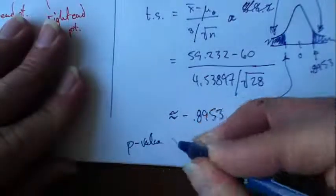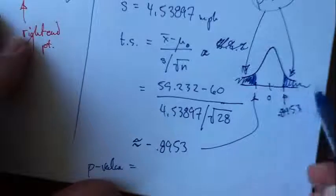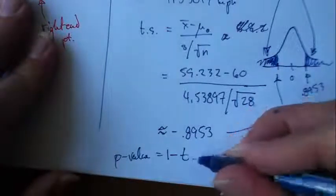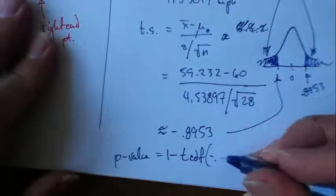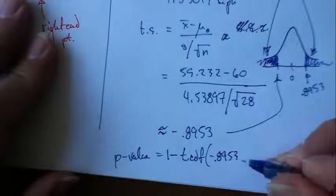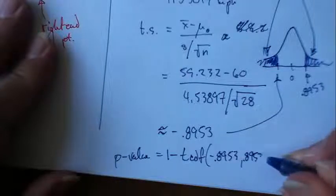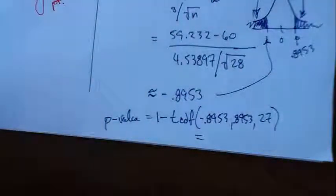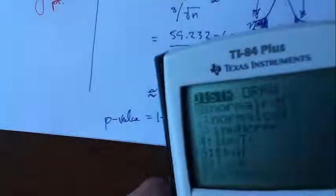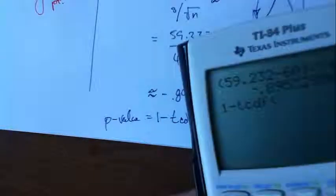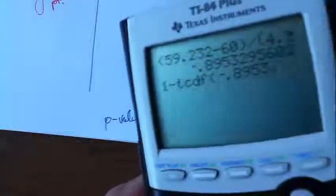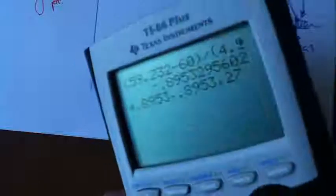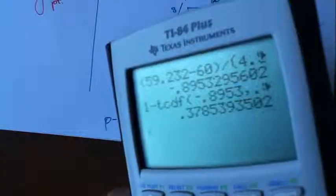So our p-value in this case, there are a couple ways to get it. I could just take the total area under the curve, which is 1, and subtract off the area in the middle. In fact, that's what I'm going to do because that's pretty slick, I think. It's tcdf negative 0.8953 up to positive 0.8953, and then you've got to drop in your degrees of freedom, 27. Remember, you have to say it like that. So this is 1 minus tcdf negative 0.8953 comma 0.8953 comma 27 close parenthesis. 0.3785 approximately.